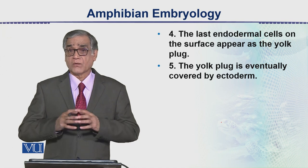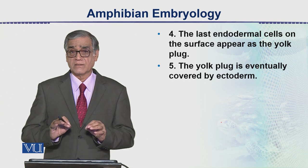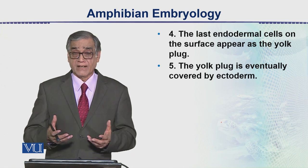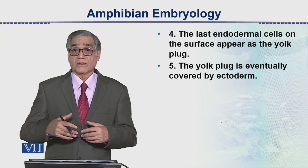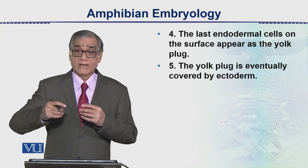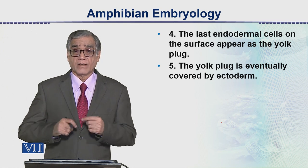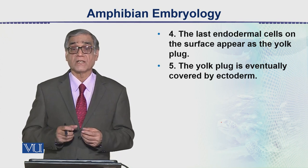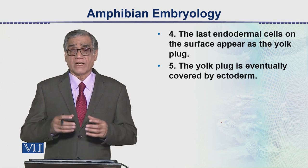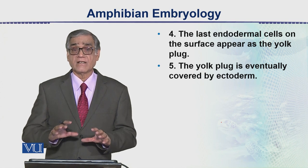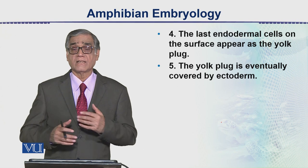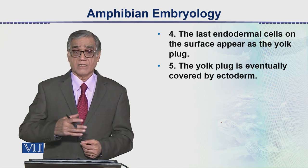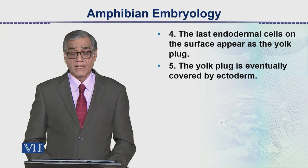An important point to remember: not a single ectodermal cell enters inside the embryo, because the ectoderm is to develop into the nervous system during organogenesis. So in early embryology, we have studied up to the gastrula stage — how gastrulation occurs and how a three-layered embryo is formed, with ectoderm, mesoderm, and endoderm as three clear layers. After this, every layer starts changing into different structures, which we will discuss further. So this is all about amphibian embryology.